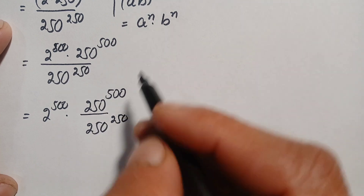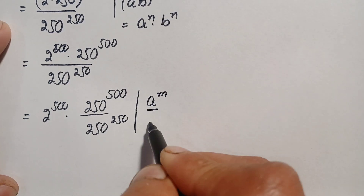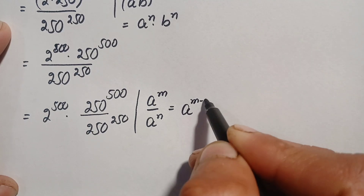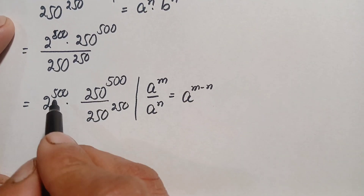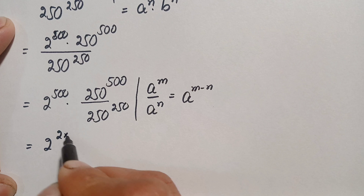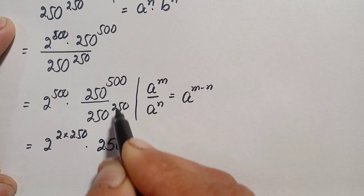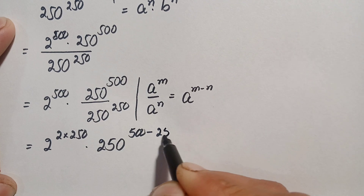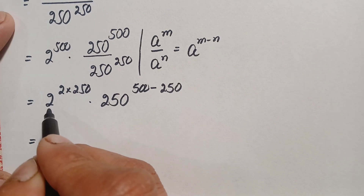We will use the same-base exponential identity: a raised to power m divided by a raised to power n equals a raised to power (m minus n). Applying this, we get 2 raised to power 500 times 250 raised to power (500 minus 250).